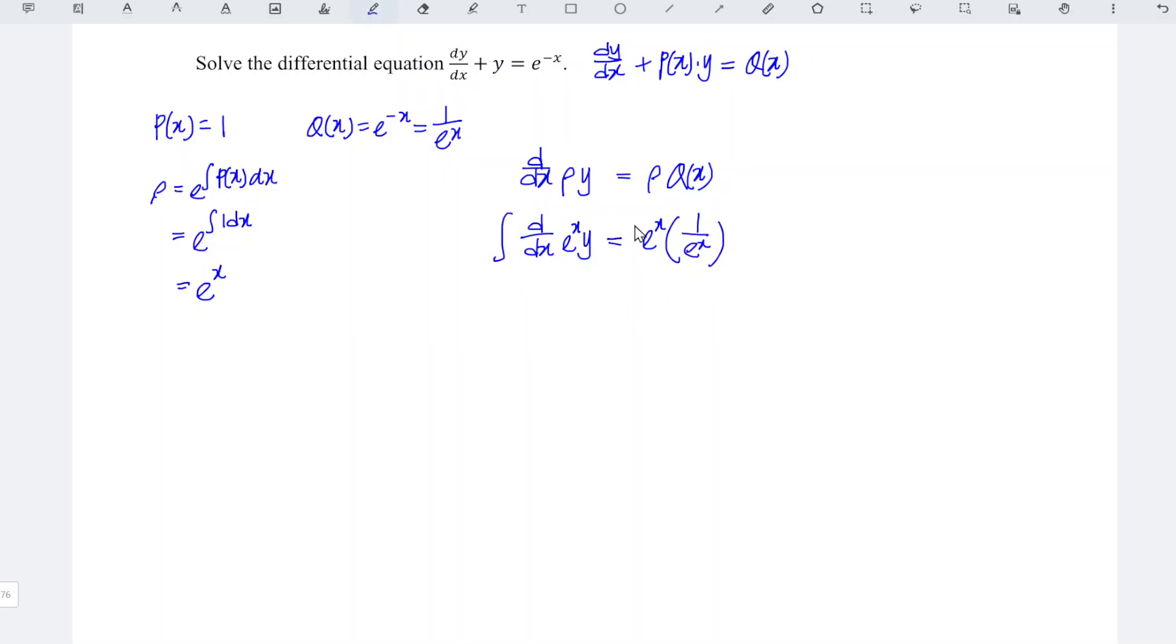So what we have to do here is integrate both sides with respect to x. Integrate and differentiate cancel each other, so the left hand side is e^x times y equals e^x times 1 over e^x, which equals 1. So we integrate 1 dx, which gives us x. Remember to add the constant c, so e^x y equals x plus c.